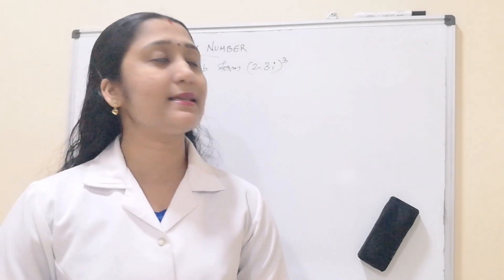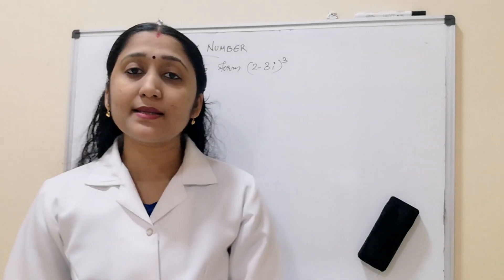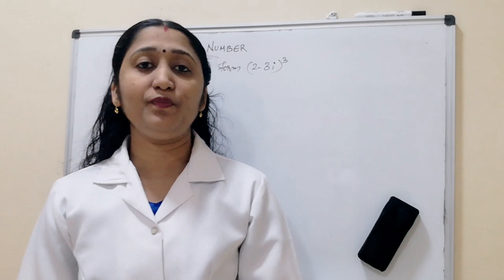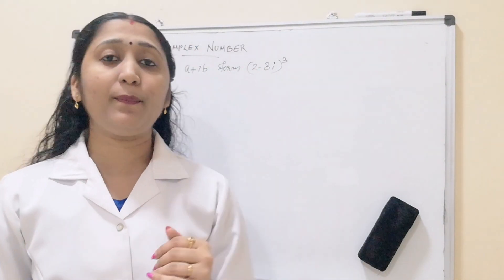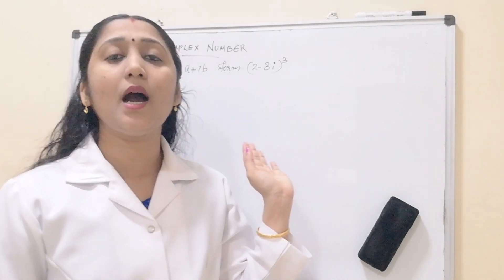Okay, let us start today's class. Here the question is this: Express a plus ib for 2 minus 3i whole cube. We want to express this in the form of a plus ib. That is a plus ib means it is a complex number. So let us see how to do this.